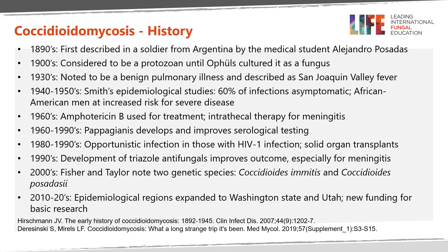Historically, coccidioidomycosis was first described in the 1890s, initially in an Argentinian soldier by the medical student Alejandro Posadas. It was subsequently noted in the San Joaquin Valley of California. In the 1900s, it was considered to be a protozoan infection until Ophuls cultured it. In the 1930s, it was described as a benign pulmonary illness called San Joaquin Valley fever. In the 1940s and 50s, Smith performed epidemiologic studies in the San Joaquin Valley and determined that 60% of infections were asymptomatic and that African-American men appeared to be at increased risk for severe disease.